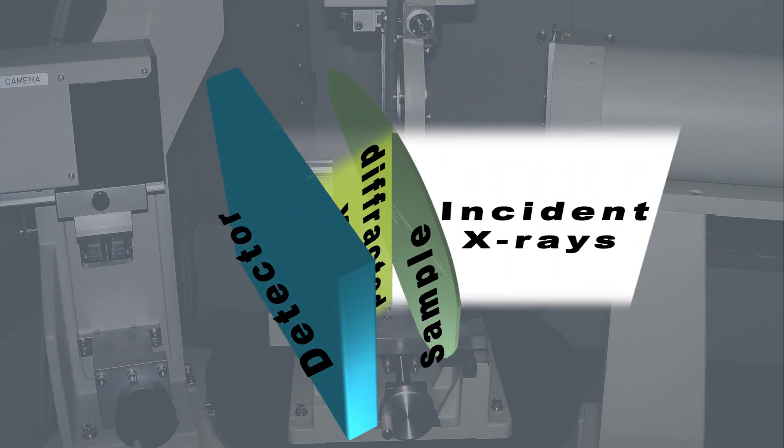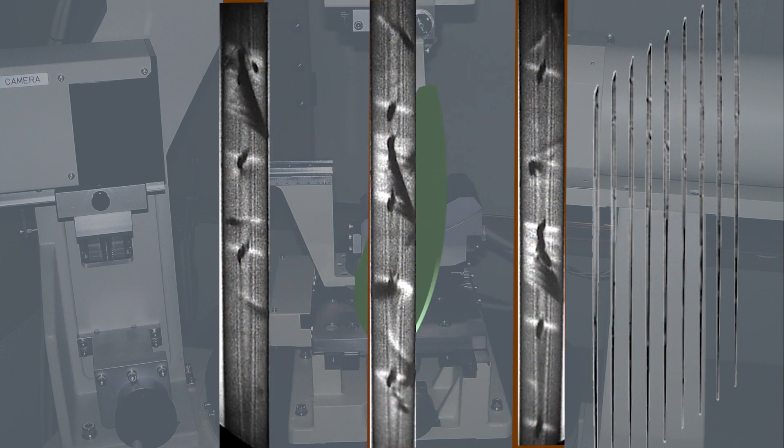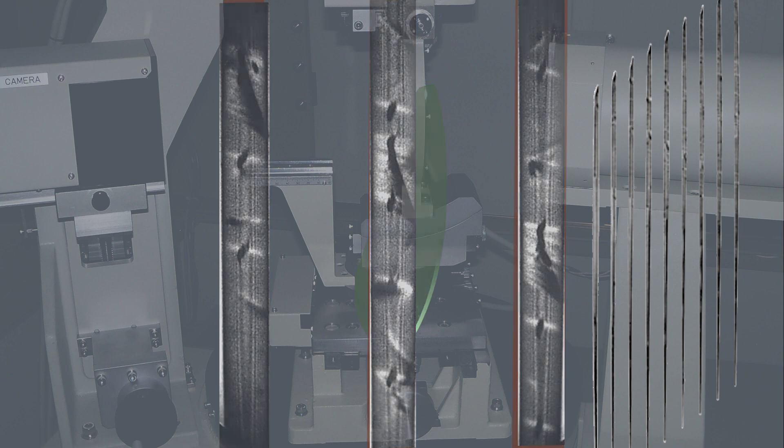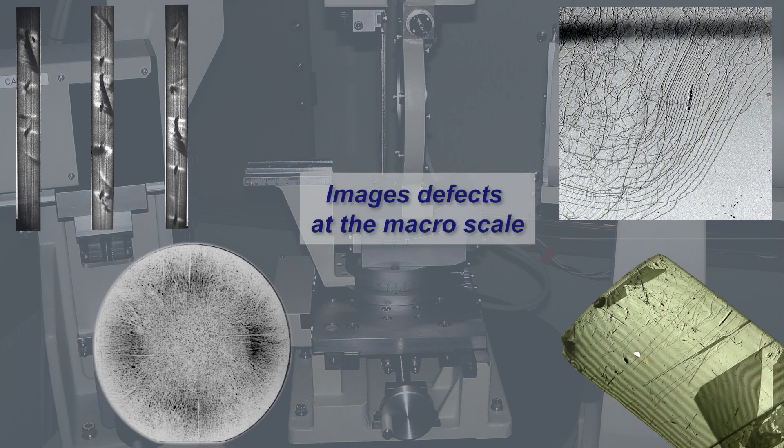Section topography is a very specialized technique requiring a very high resolution detector. It measures defects in the sample as a function of depth, typically in multiple locations to provide a third dimension to the data. In summary, what you need to remember is that X-ray topography is a simple technique to image defects at the macro scale.